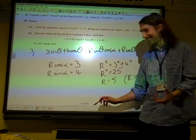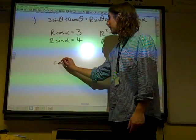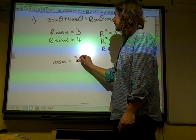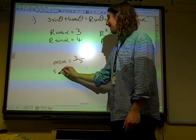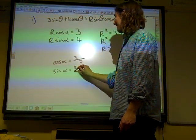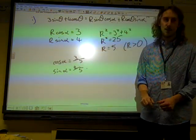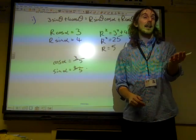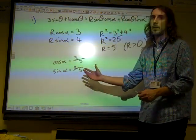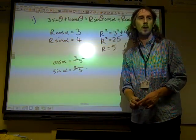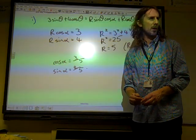We need to find alpha as well. Both of those, we went through inverse cos of 3 fifths, inverse sine of 4 fifths. It was 53.1, was that right?